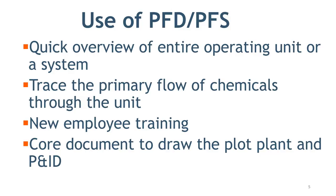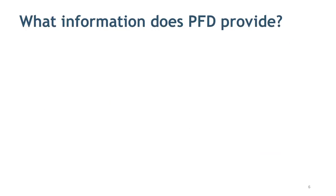What information does PFD provide? A typical PFD will include all major equipment. Each equipment shown on PFD has a unique equipment number and a descriptive name. It also shows main dimensions, capacity, and operating information of the equipment.